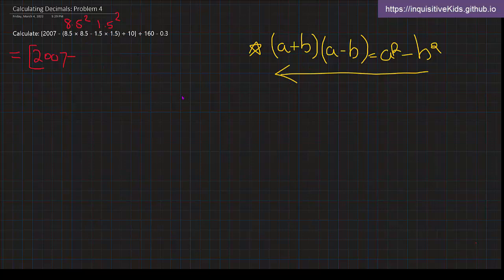We know that this already is a squared minus b squared. As I said, you could also go from right to left, so this is now 8.5 plus 1.5 times 8.5 minus 1.5.